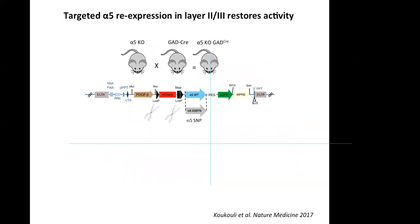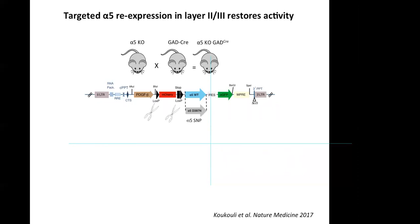Because alpha-5 nicotinic receptors are also expressed in pyramidal cells of deeper layers, we asked whether the phenomenon recorded in layer 2-3 is layer-specific. To answer this, we crossed alpha-5 knockout mice with GAD-Cre mice and obtained alpha-5 knockout GAD-Cre mice. By injecting a conditional lentivirus, I was able to re-express either the alpha-5 wild-type subunit or the alpha-5 SNP subunit only in interneurons of layer 2-3 of the prefrontal cortex, and recorded pyramidal cell activity.